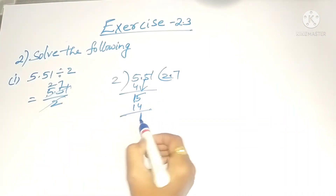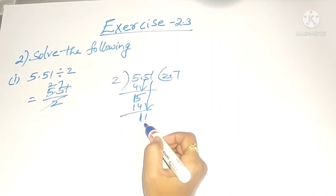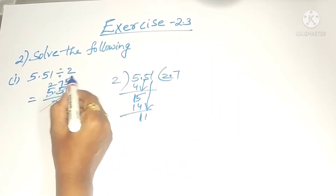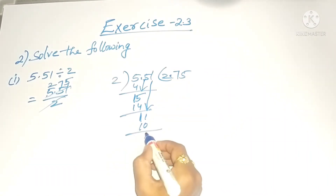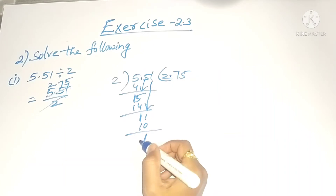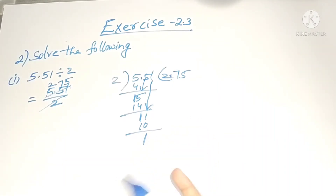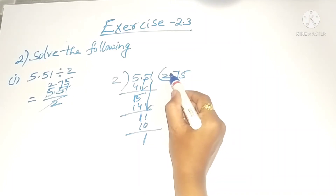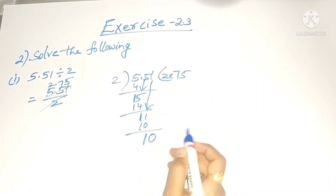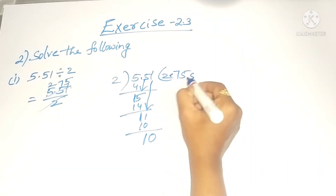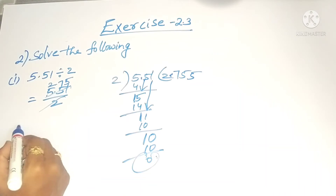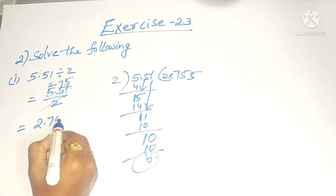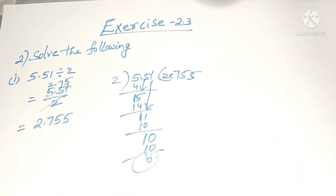14 is there, so one will remain. One comes down, making it 11: two fives are 10, one will remain. Since we cannot leave a remainder, we add a zero on the right side. Two fives are 10, so the answer is 2.755. The second one is 38.4 divided by 3.